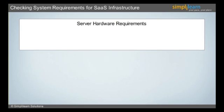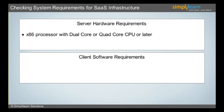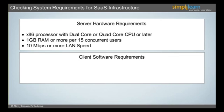Let's understand the Server Hardware Requirements and Client Software Requirements essential for SAAS Infrastructure. The minimum recommended Server Hardware Requirements are an X86 Processor with Dual-Core or Quad-Core CPU or later, that includes 1GB RAM or more per 15 concurrent users, and it also requires 10 Mbps or more LAN speed.